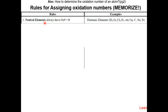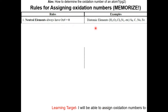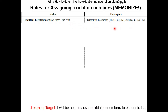Here are the rules for assigning oxidation numbers — you have to memorize these for the Regents exam. Rule one: neutral elements always have an oxidation number of zero. Here are some examples of substances consisting of only one element or atom — they have an oxidation number of zero.